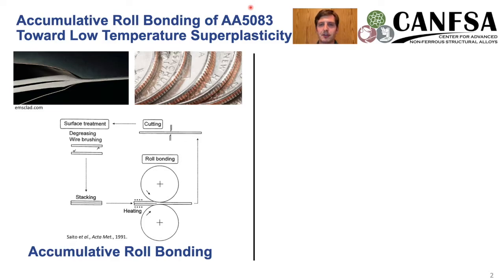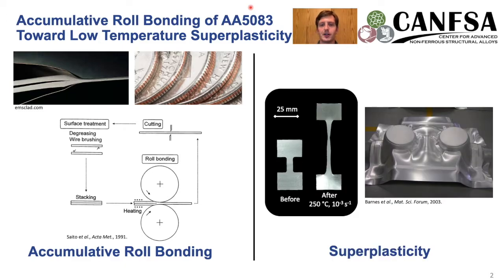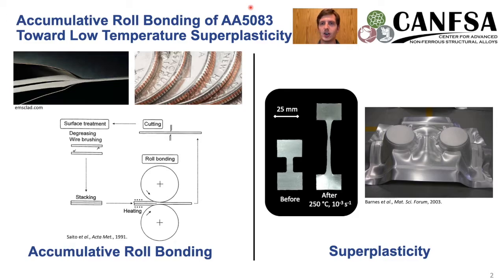Roll bonding has been around for decades and it's commonly used to produce coinage in the US currency system, but we're actually using this to impart a lot of strain in material that leads to grain refinement. This grain refinement we hope can lead to low temperature superplasticity, which is typically characterized by very high tensile elongations often in excess of 200%, allowing us to form very delicate and intricate sheet geometries for the aerospace and automotive industry.